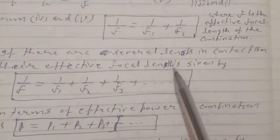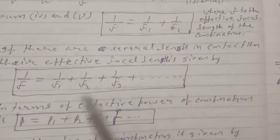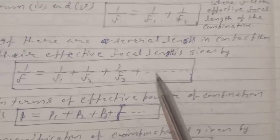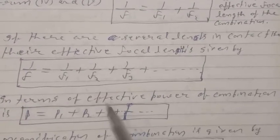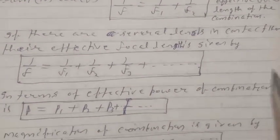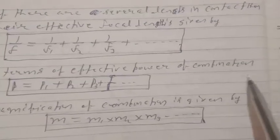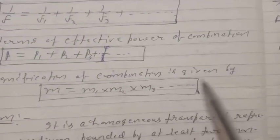From these equations, 1/F equals 1/F1 plus 1/F2, where F is the effective focal length of the combination. If there are several lenses in contact, their effective focal length is given by 1/F equals 1/F1 plus 1/F2 plus 1/F3 plus... In terms of effective power: P equals P1 plus P2 plus P3 plus... The magnification of the combination is given by M equals M1 × M2 × M3 ×...